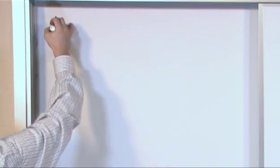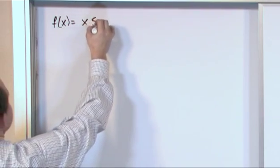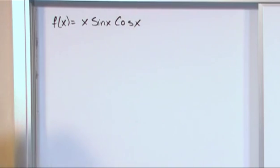Let's say we have the following function. f of x is equal to x times the sine of x times the cosine of x, and we want to take its derivative.